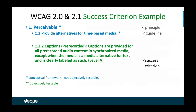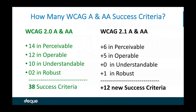When we're trying to measure something, we have to be able to measure it reliably, repeatedly, and with multiple people — that's why focusing on success criteria is so important from a legal perspective. In WCAG 2.0 AA, out of those 38 success criteria: 14 are in perceivable, 12 in operable, 10 in understandable, and 2 in robust.